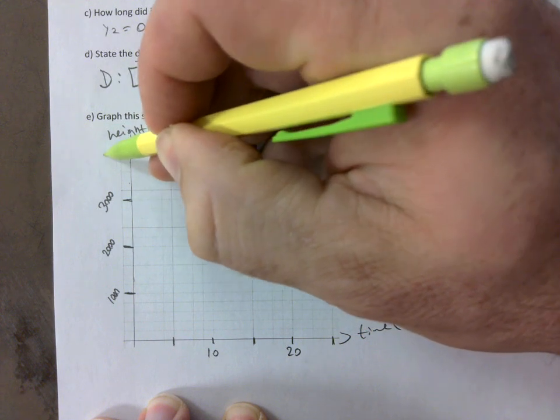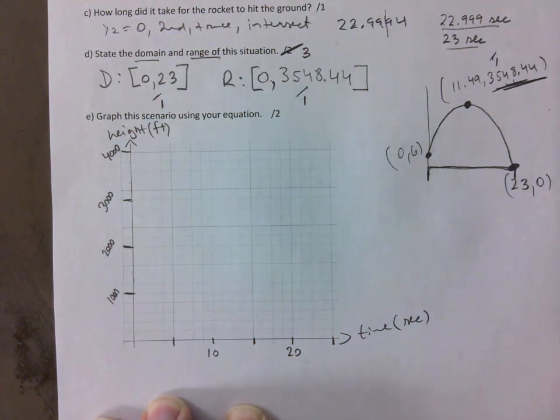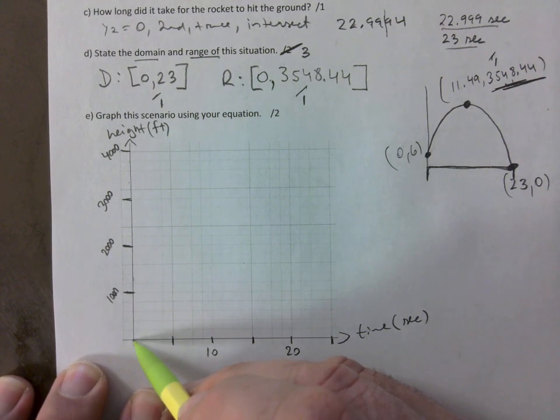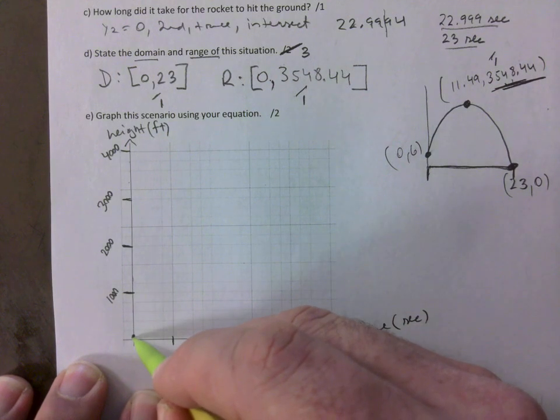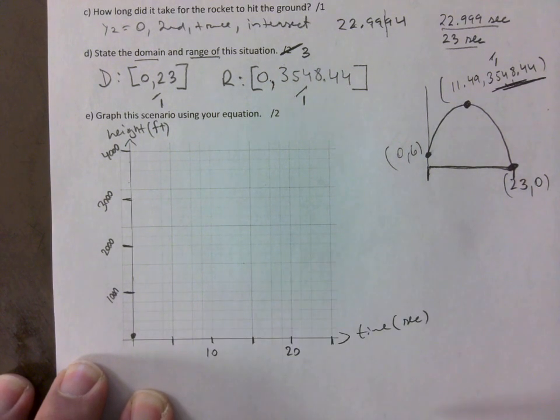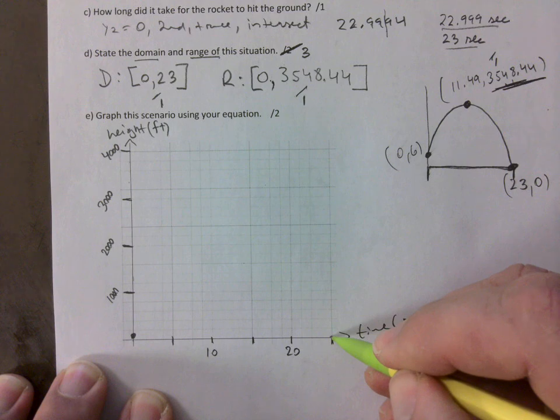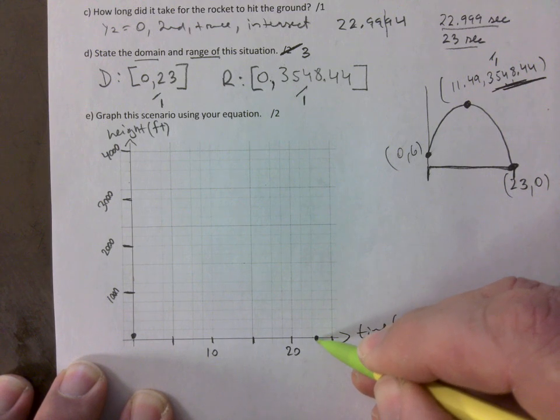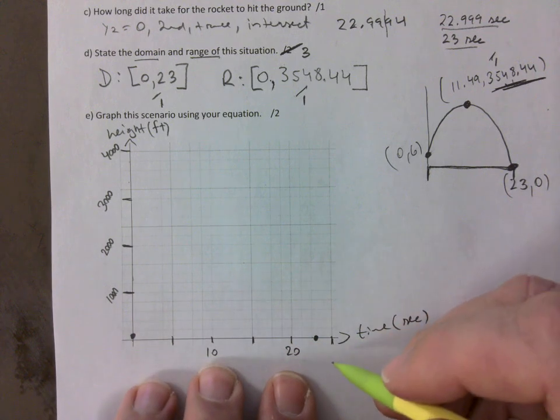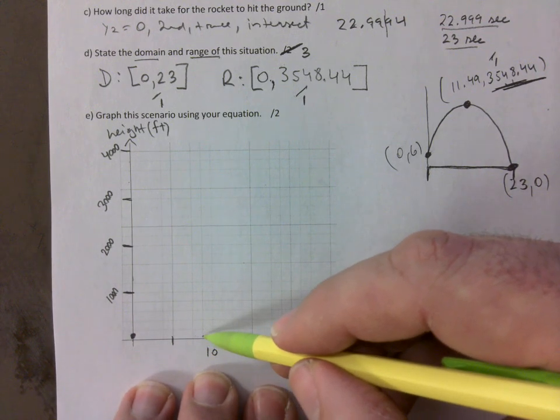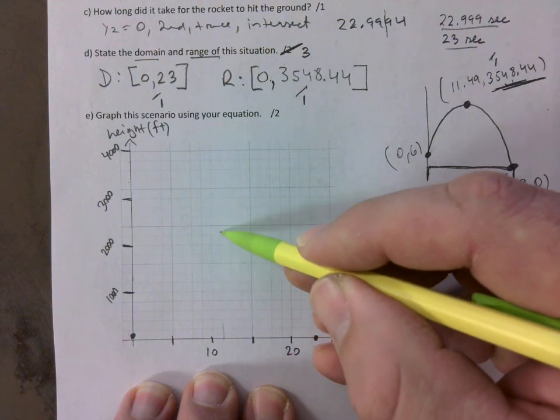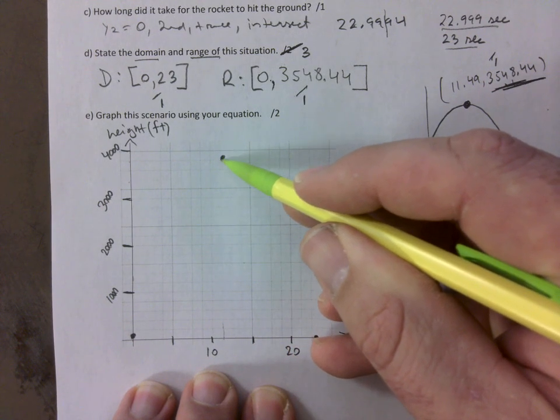So I just made it fit. You cannot have this right on the origin. Because this is 0, 6. So just have it slightly above. Like that. 23. This is 25. So 22 and a half would be here. 23 slightly over there. So you've got those points. And then the vertex is at 1149. So somewhere here. And 3,800. That would be somewhere there.